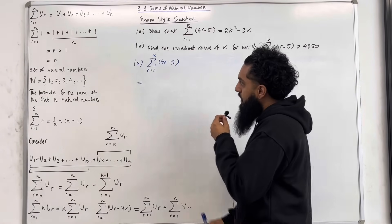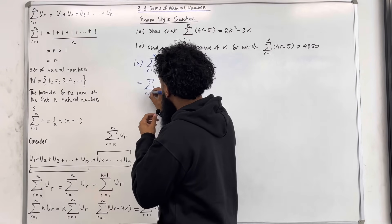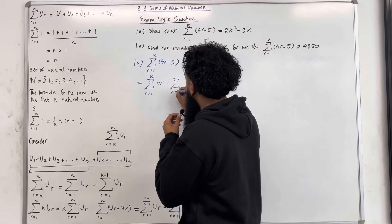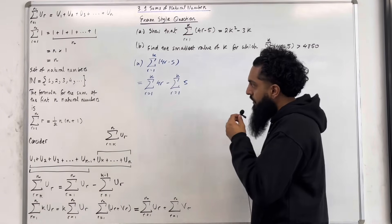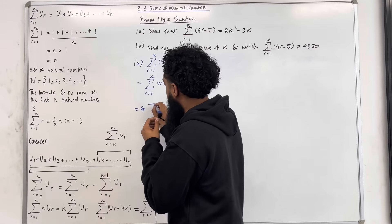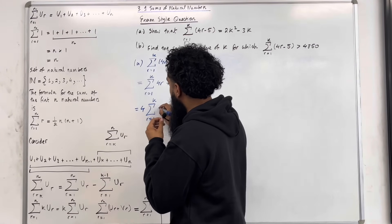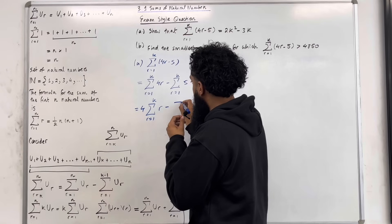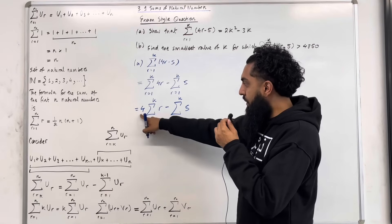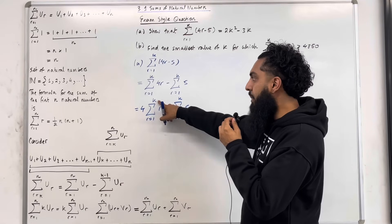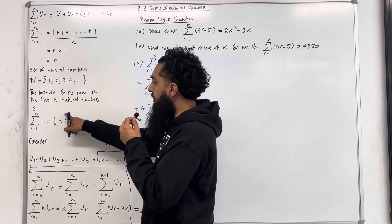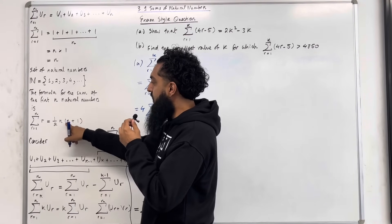We have the sum from R equal 1 to K of 4R minus 5. We can split this into the sum from R equal 1 to K of 4R, take away the sum from R equal 1 to K of 5. The 4 we can take outside the summation, so this equals 4 lots of the sum from R equal 1 to K of R, take away the sum from R equal 1 to K of 5. So we have 4 lots of the sum of the first K natural numbers.